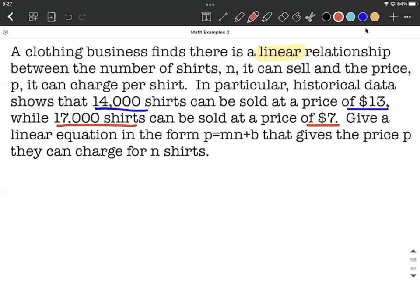So it's important how they define this, that they told us P is on one side by itself, kind of like Y is normally, and N is our variable on the other side. So as we set up these ordered pairs, basically we have an N variable and we have a P variable.